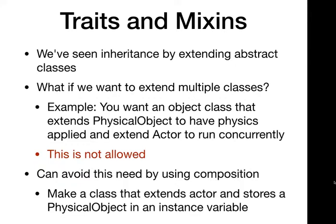Let me set up the scenario. I have a class that I'm writing, extending some other class, and I'm in a situation where I want to extend two classes — two abstract classes or a combination thereof. Say I have some class: I want it to act as an actor, be able to run concurrently and respond to actor messages, but I also want it to be a physical object that works in a physics engine. So I give a reference of this type to the physics engine. I want a class that extends both of these. What do I do? Well, I just don't. That's just not allowed.